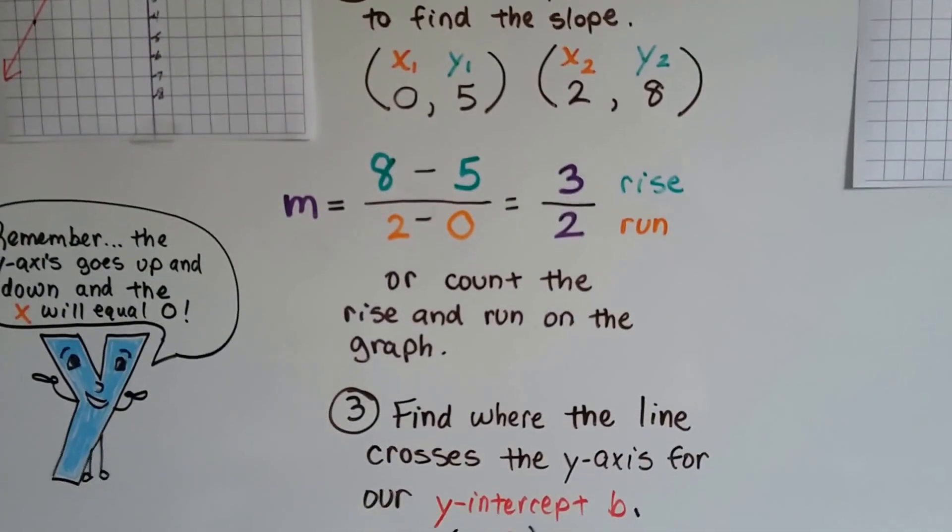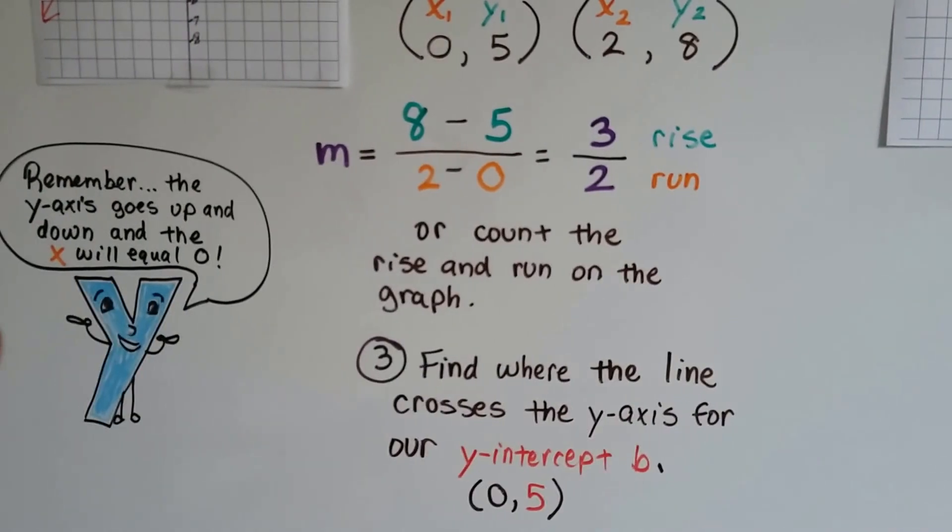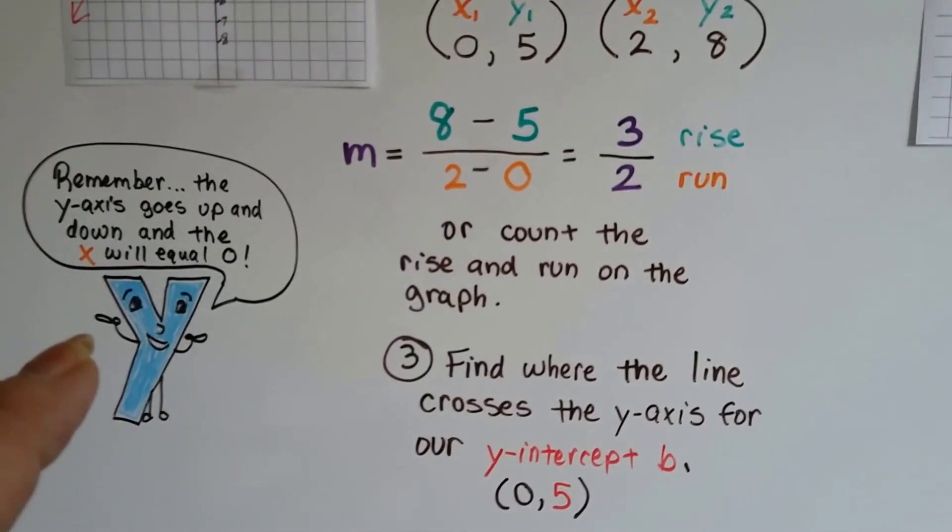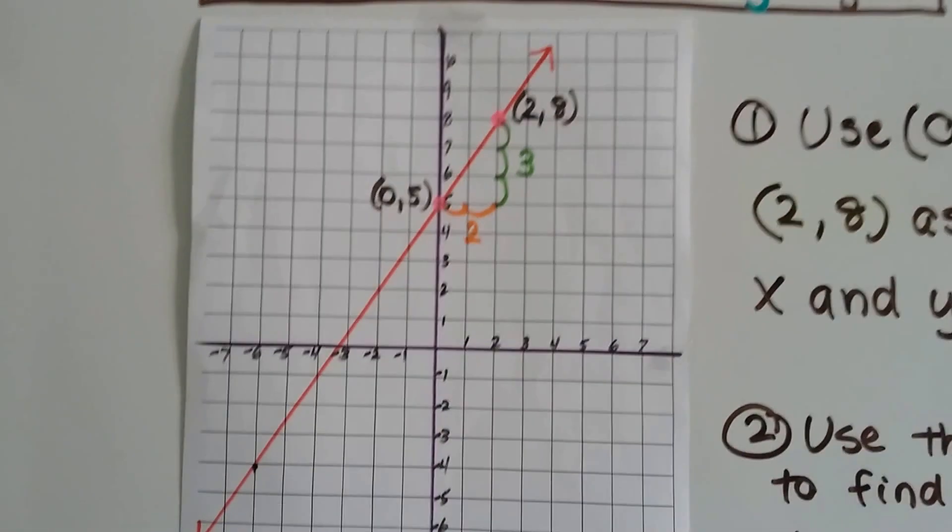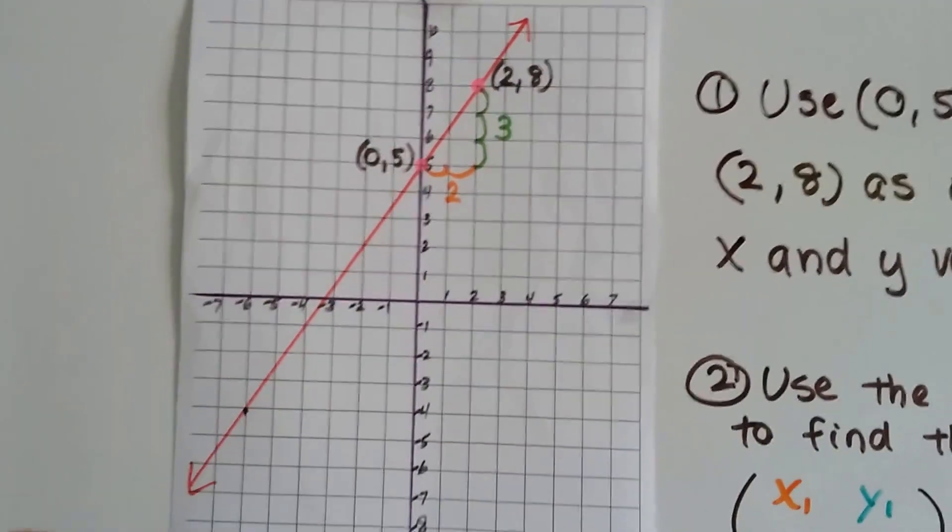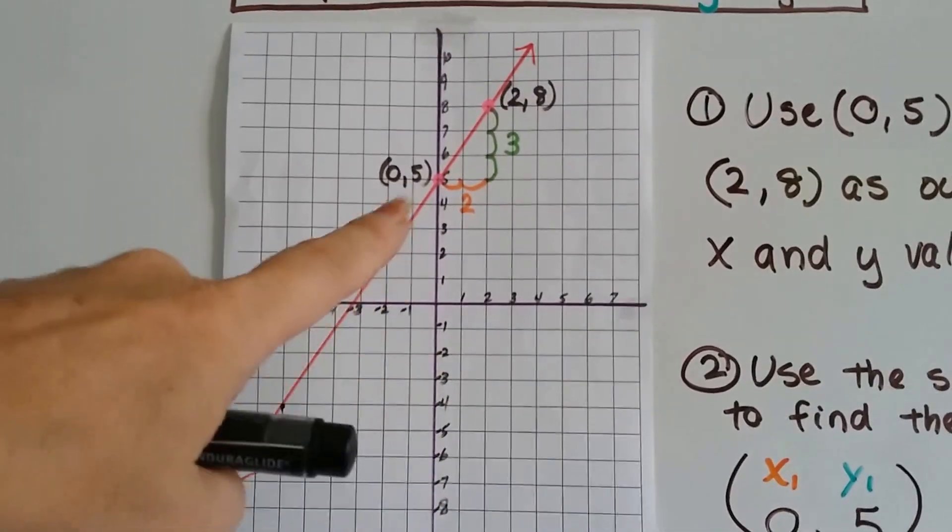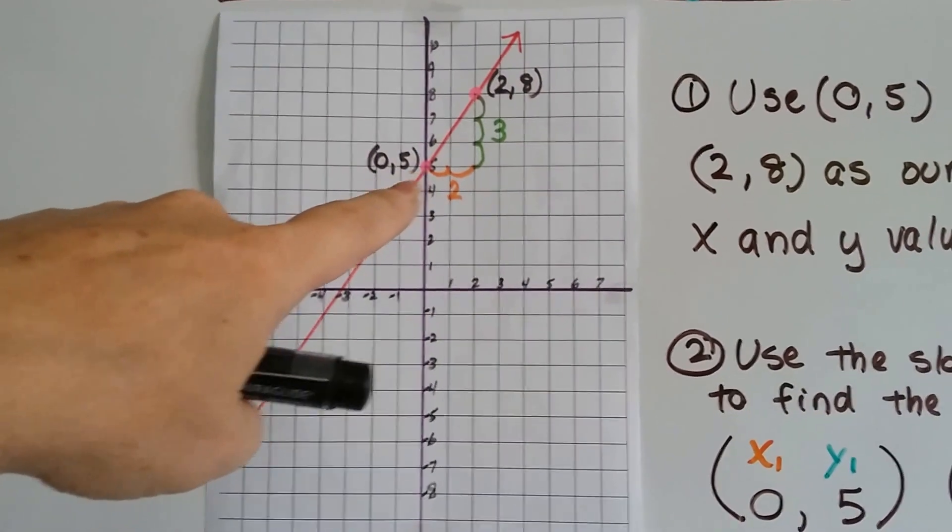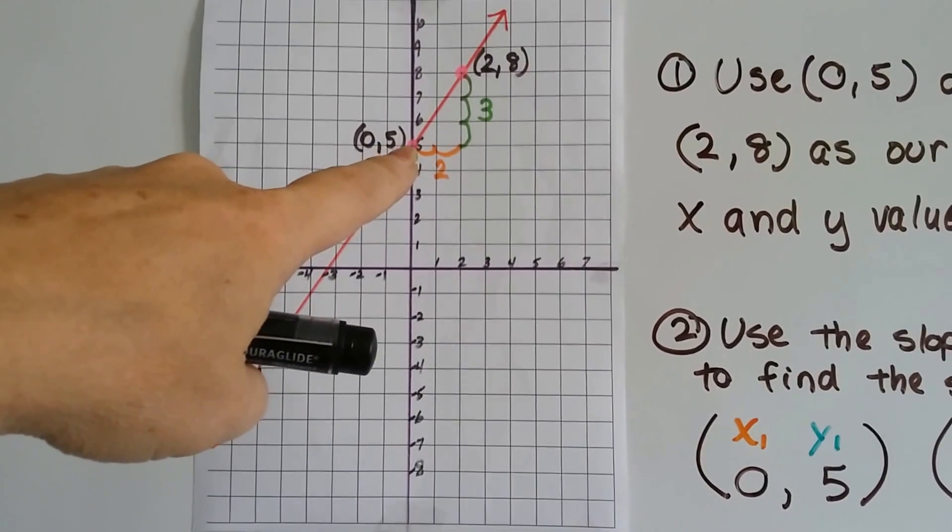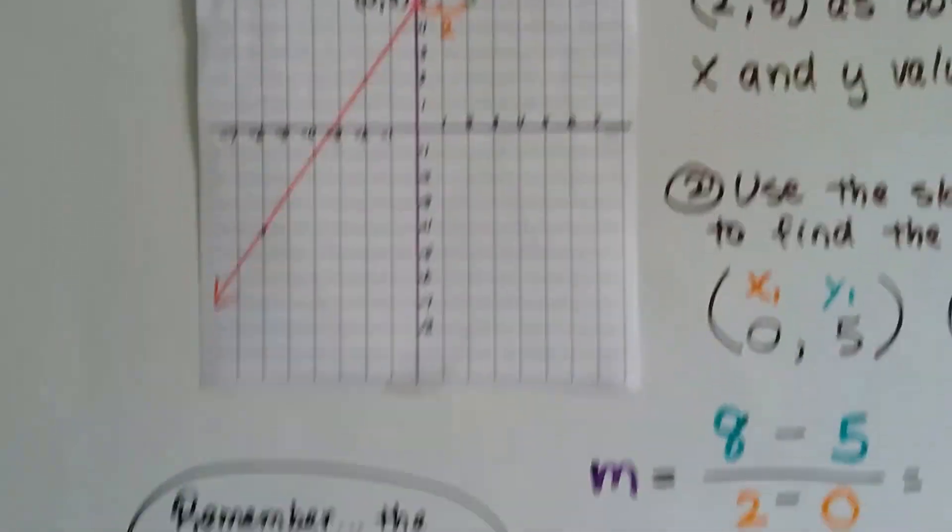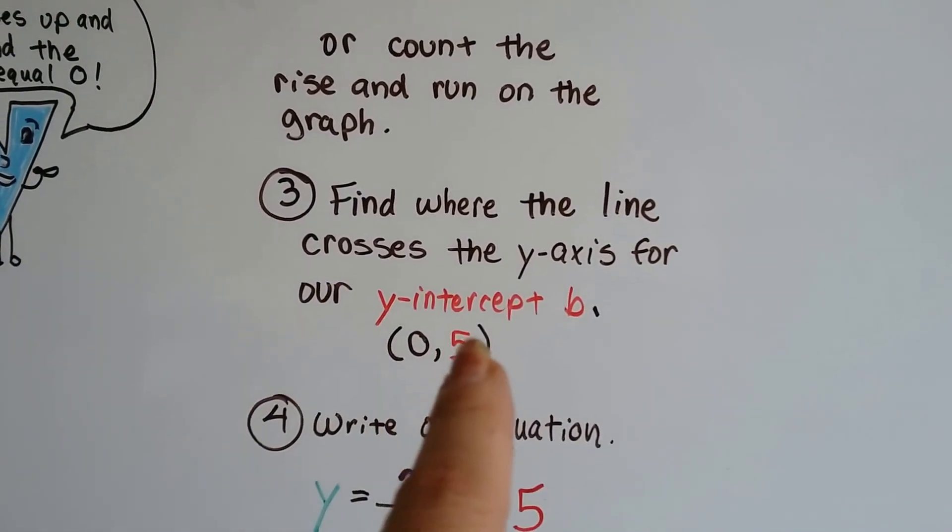Now that we've got our rise and our run, our slope is 3 over 2. We find where the line crosses the y-axis for our y-intercept b. Remember, the y-axis is the one that's going up and down, and that's where x is going to equal 0. So, where does the line hit the y-axis? Remember, y goes to the sky. So, that's this one. And the line is hitting it right here at 0, 5. Well, that's perfect. The x is 0 like it's supposed to be. And our y-value is a 5. So, our y-intercept is 5.